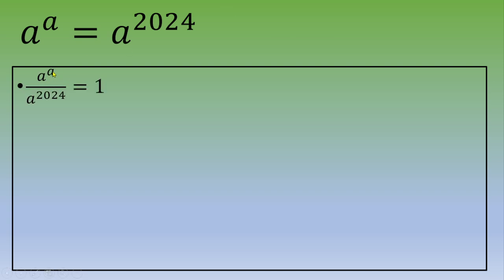...a^a divided by a^2024 = 1. Then if we apply the power rule a^m divided by a^n, this is a^(m-n). So we end up with a^(a-2024) = 1.